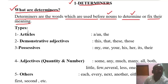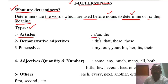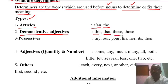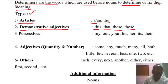There are the following types of Determiners. First, Articles — A and An are the articles. Second, Demonstrative Adjectives — This, That, These, Those are the Demonstrative Adjectives. Third, Possessives — My, Our, Your, His, Her, Its, Their. With the help of these words, we express possessives.